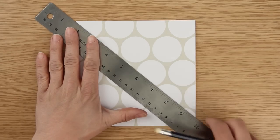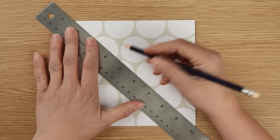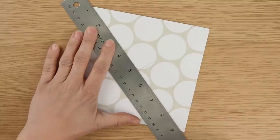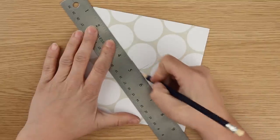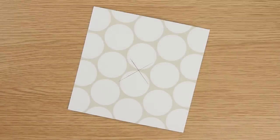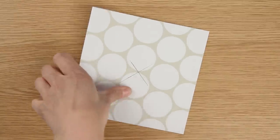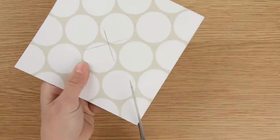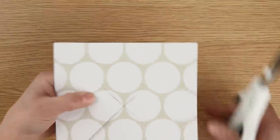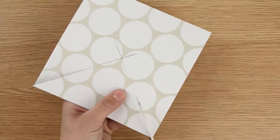First thing we need to do is mark the center of our square of paper. And then use our scissors to cut from each corner of the paper to close to the center but leaving a gap so that we can later add a brad.